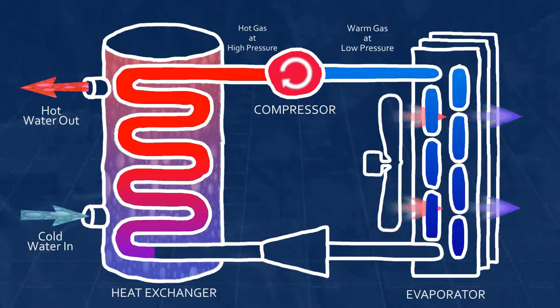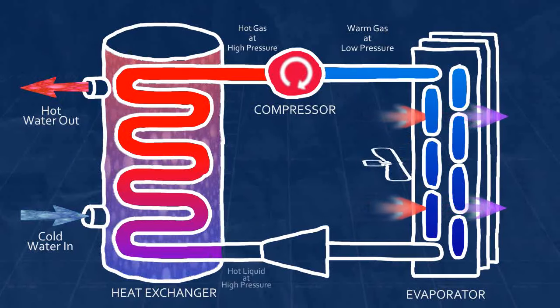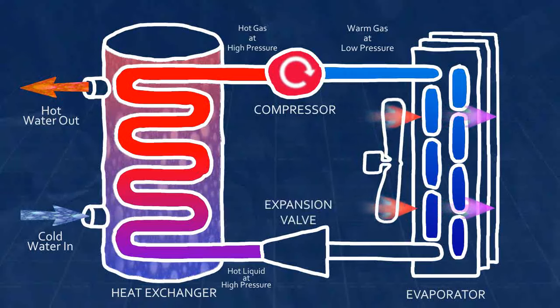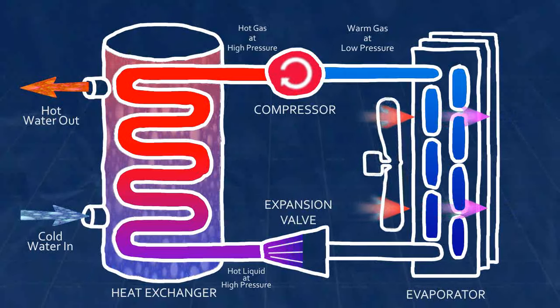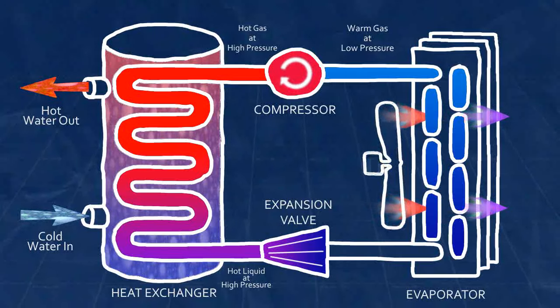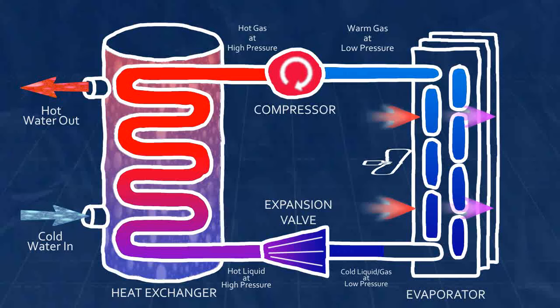Finally, the now cooler, high pressure liquid refrigerant passes through an expansion valve. As the refrigerant passes through the valve, its pressure and temperature are greatly reduced. Now cold and in a vaporous state, the refrigerant is once again ready to absorb heat from the room air and repeat the cycle.